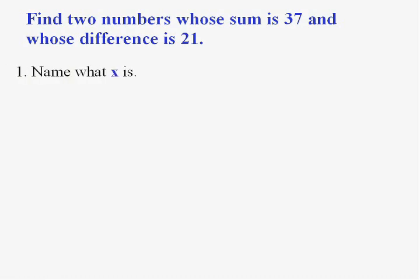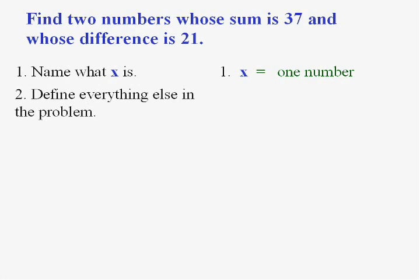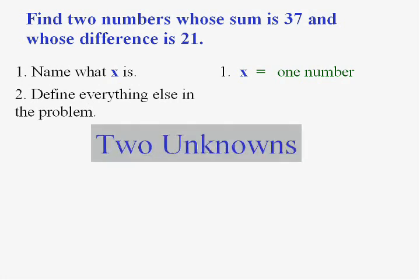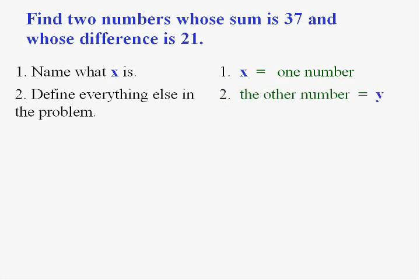Well, we have to start somewhere. Let's name what one of the variables is. Now we have two numbers here, so let's let X be one of those numbers. What else is involved in the problem? Well there's two unknowns, there's one number and let's let the other number be Y.